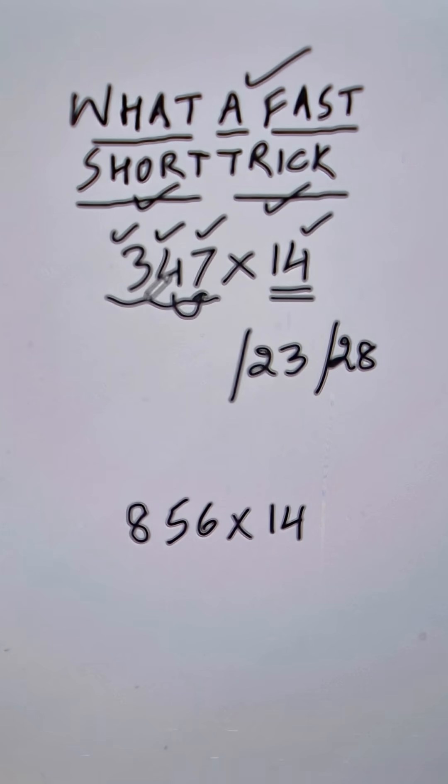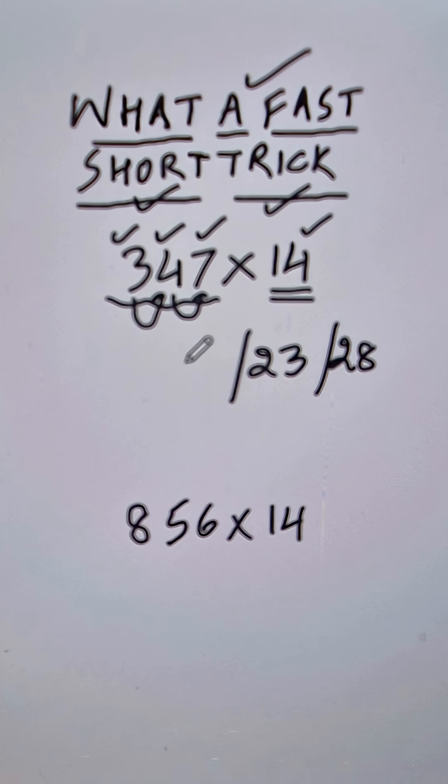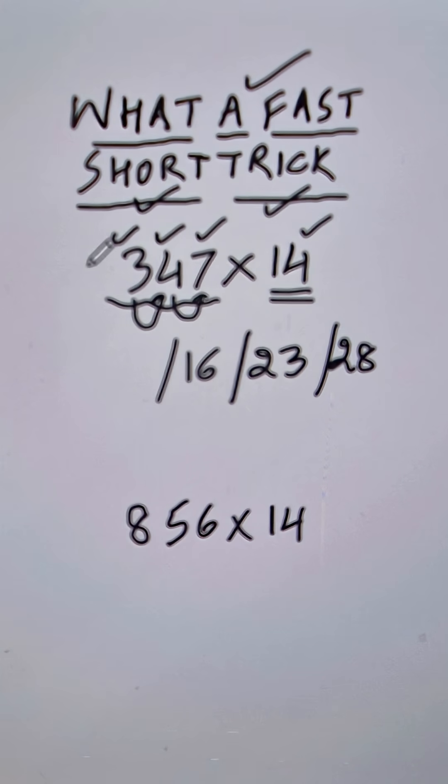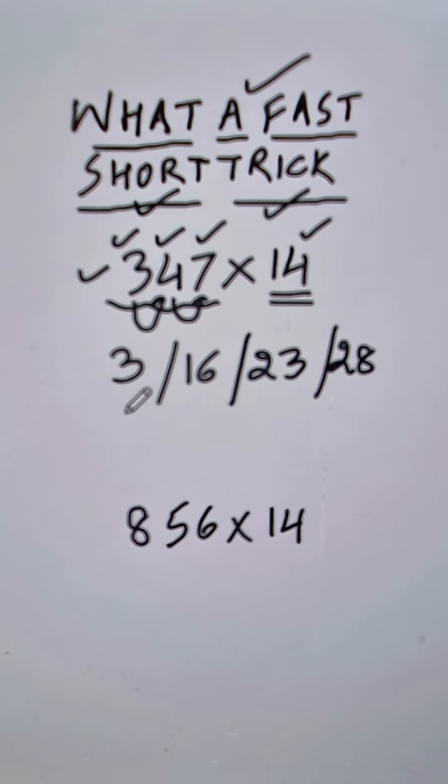Likewise, 3 times 4 is 12. Add the next digit 4, you get 16. And finally write the first digit as it is here. So you get 4 numbers: 3, 16, 23, and 28.